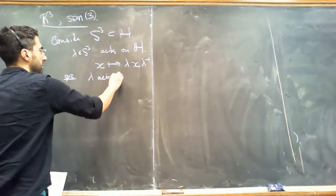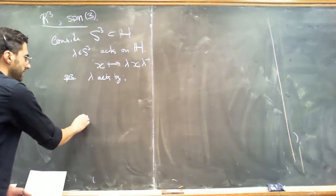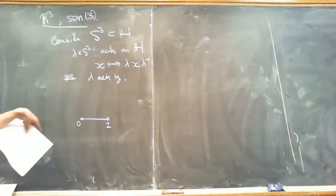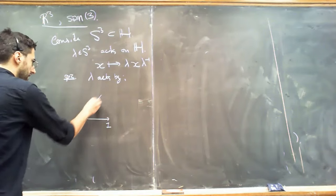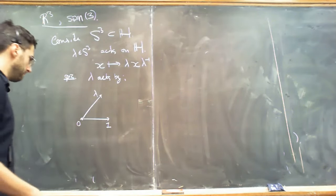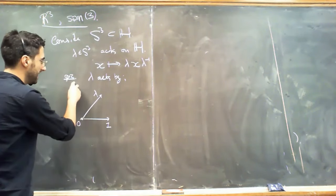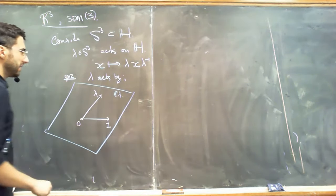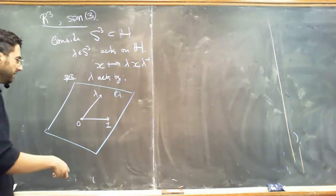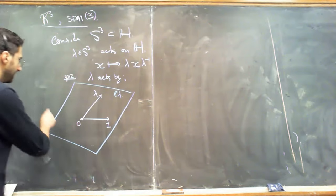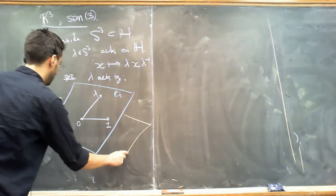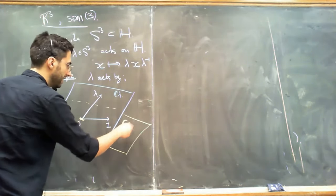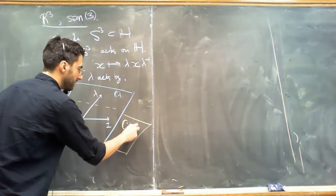Let's draw a picture. Here is the quaternion zero, here is the quaternion one, and let's suppose λ is not plus or minus one. So we draw λ here as some unit quaternion. There is a plane spanned by λ and 1, which forms a copy of the complex numbers — I'll call it C_λ — sitting inside H. Orthogonal to that is another plane, generated by λ times the quaternion j.